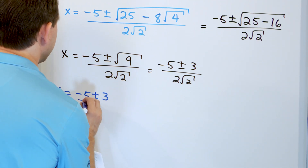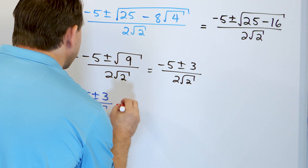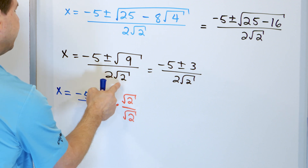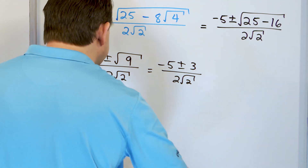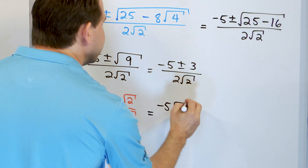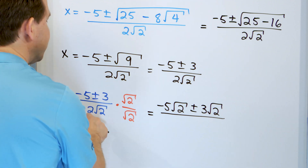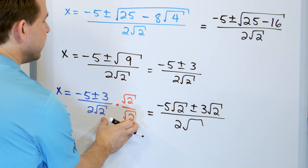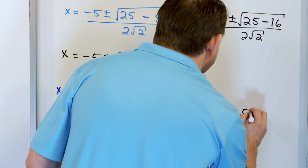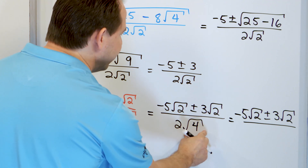So I take negative 5 plus or minus 3 over 2 root 2, and I multiply by square root of 2 over square root of 2. Don't forget that when you multiply the numerator, the square root of 2 distributes to both terms — to the negative 5 and to the 3. So you have negative 5 times root 2, plus or minus 3 times root 2. On the bottom, 2 times the square root of 2 times square root of 2 — we can make that the square root of 4, which is 2, so 2 times 2 is 4 on the bottom.